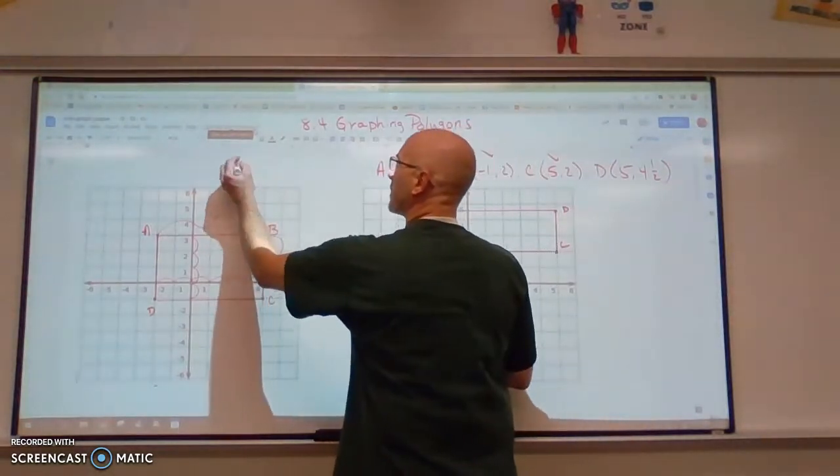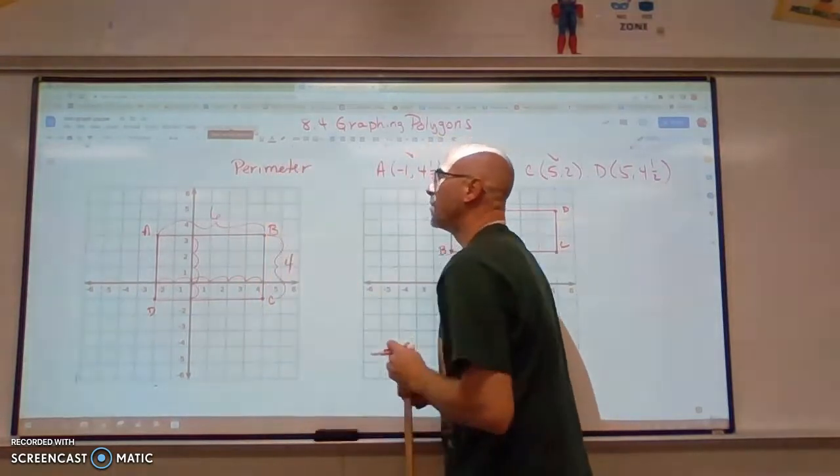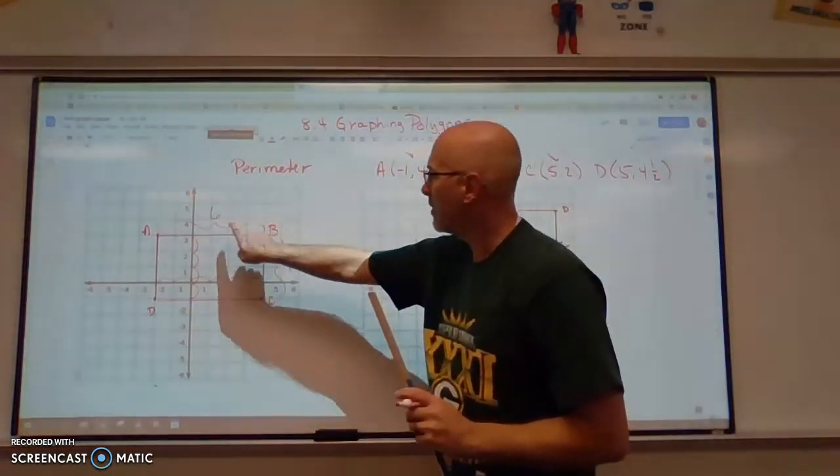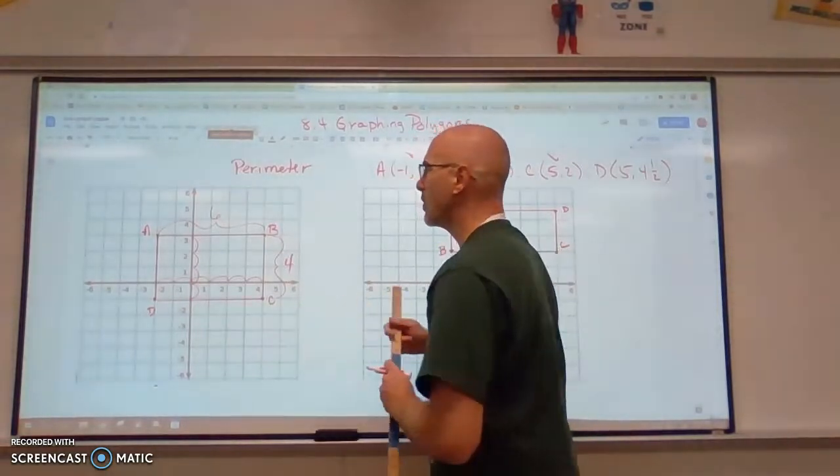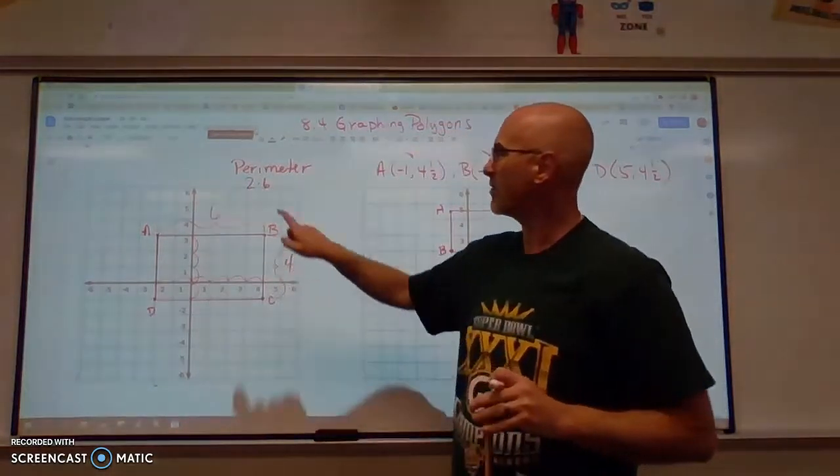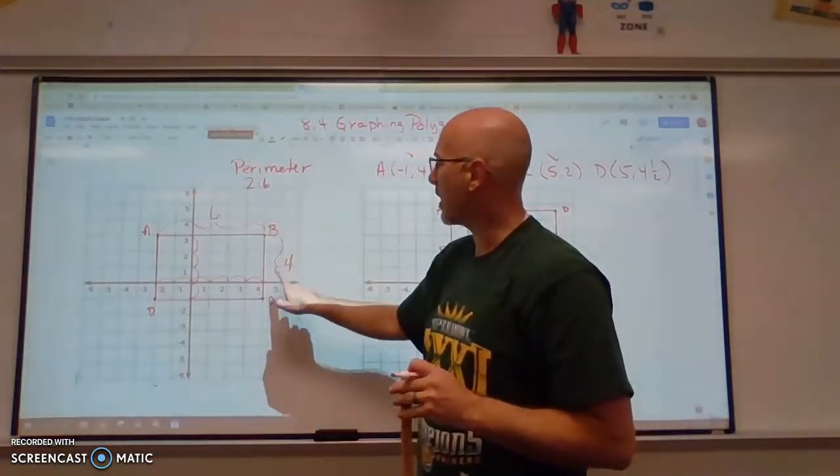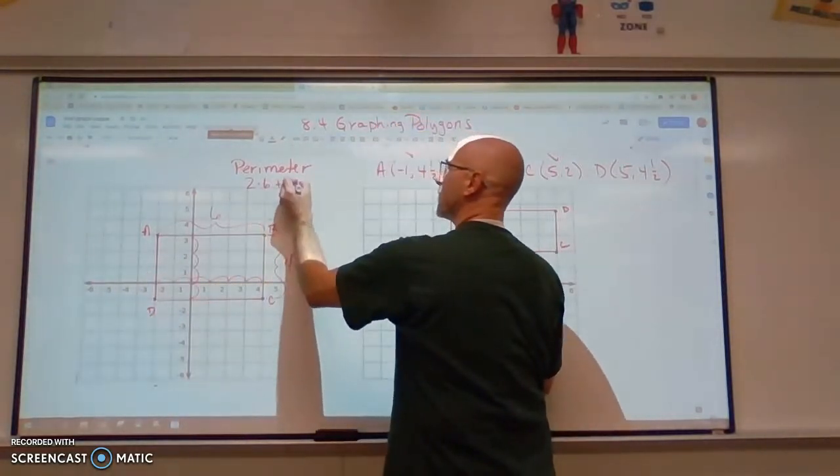So remember, we are looking for the perimeter. So if we have a six here and a six here, we have two sixes. So we can say two times six. We have two of them. And then we are going to add to that two fours, two times four.